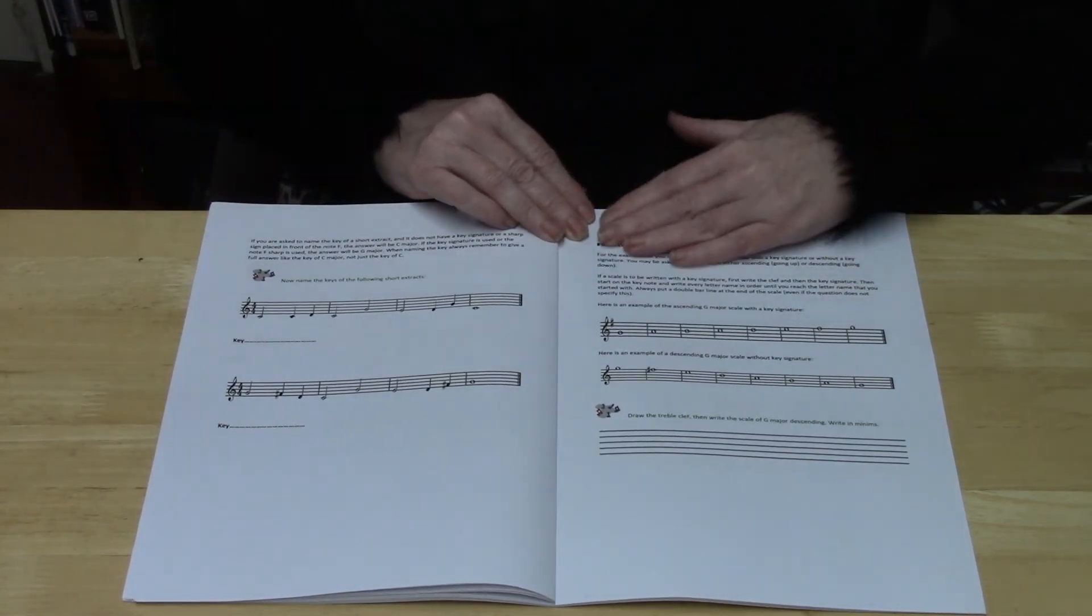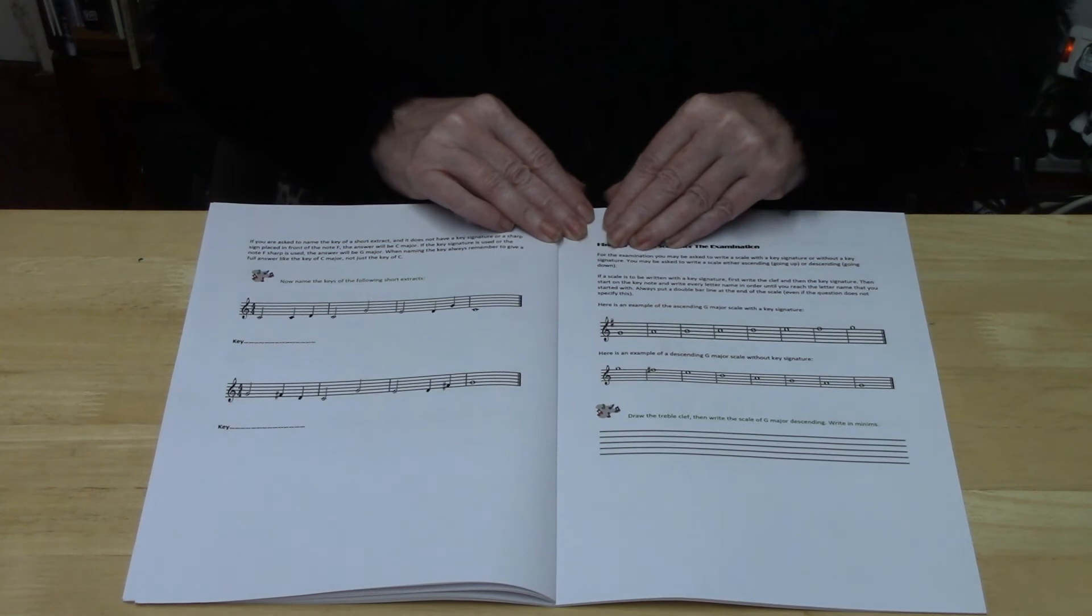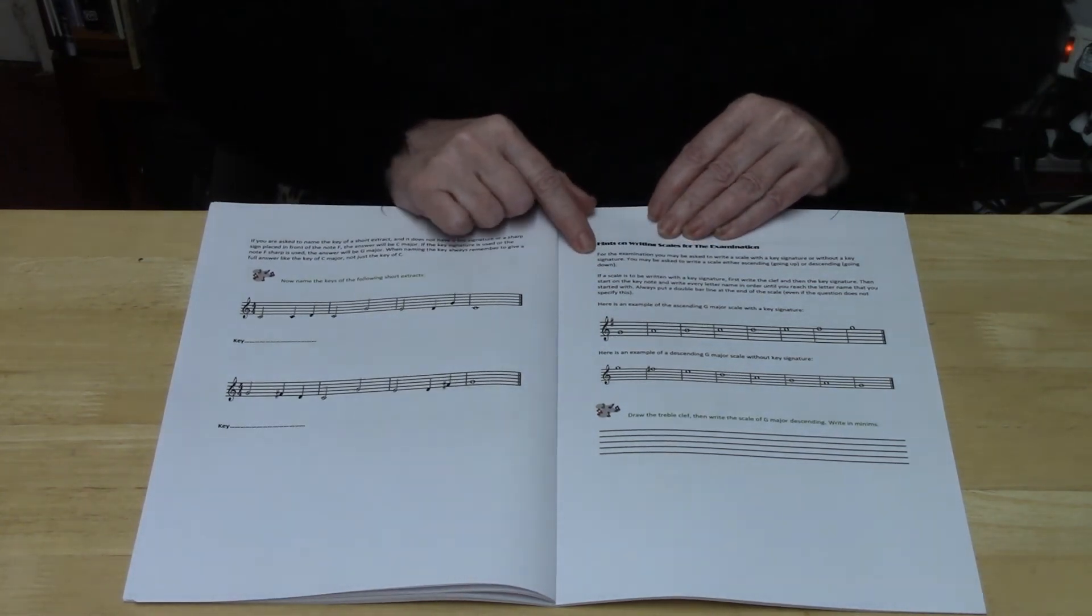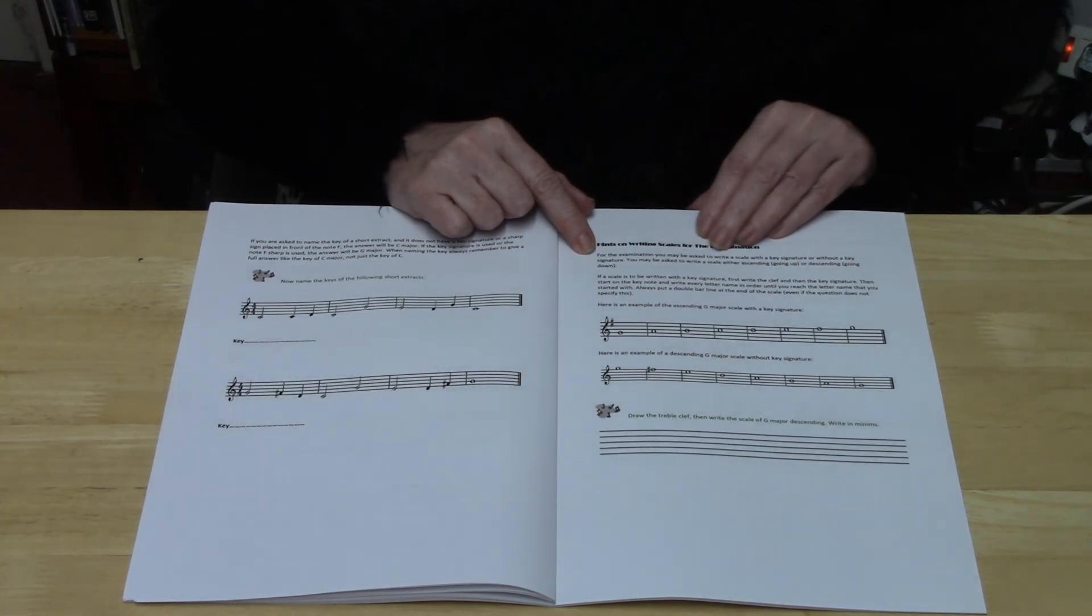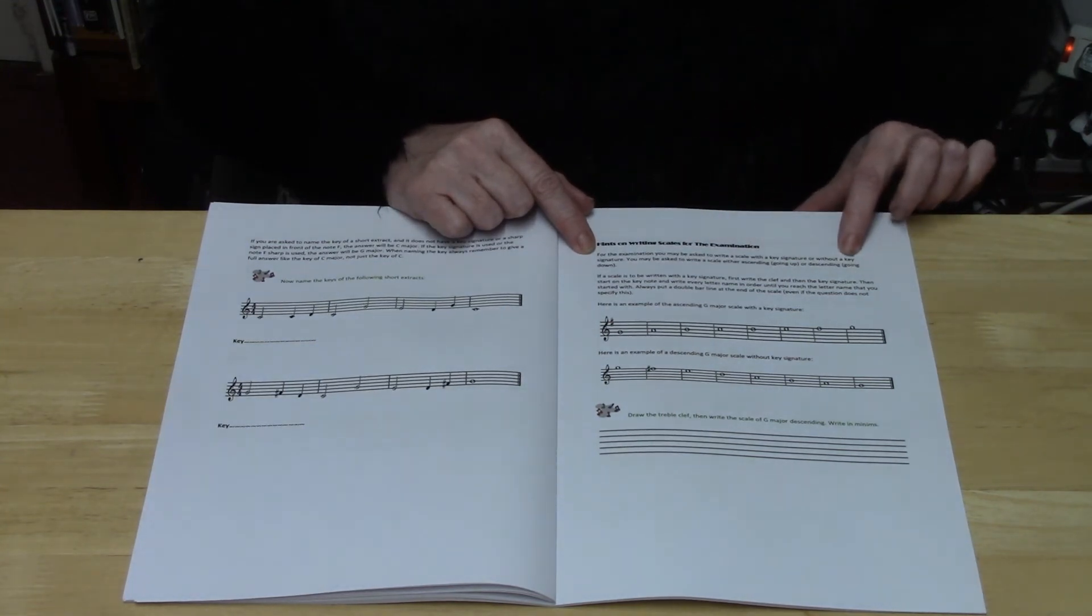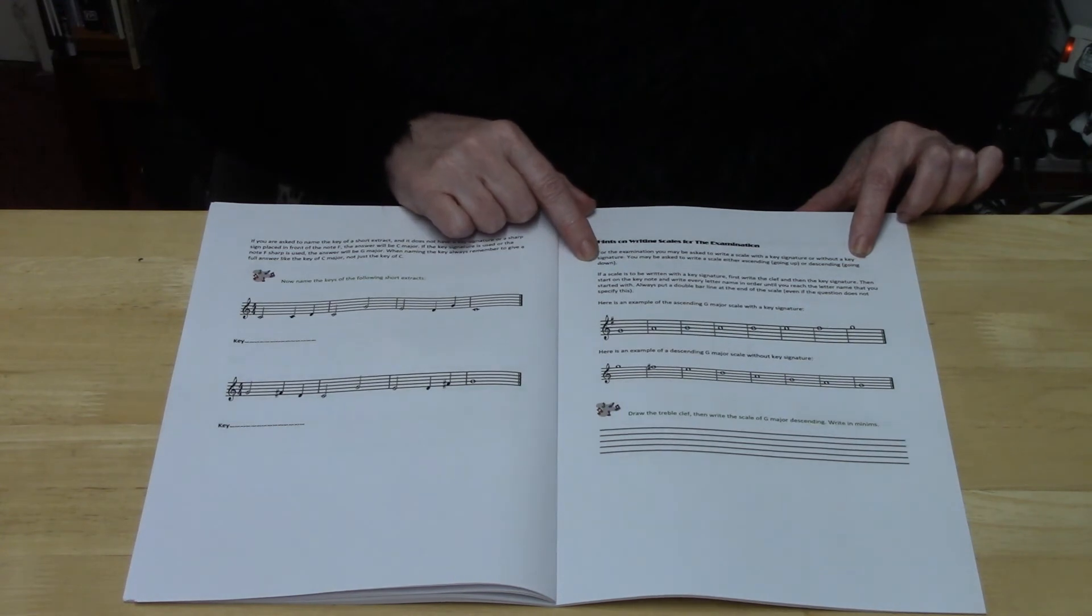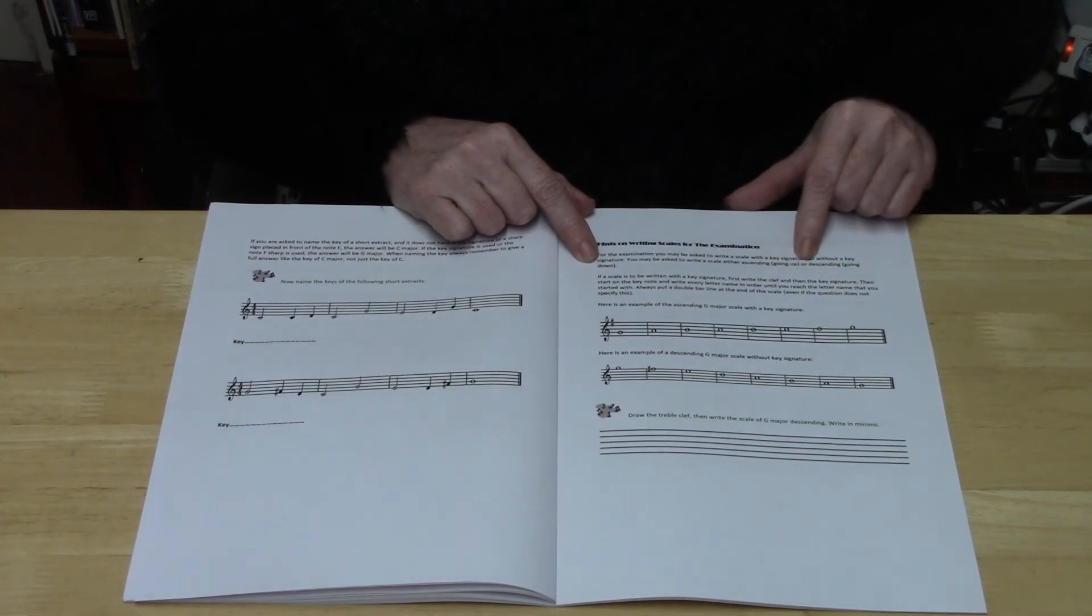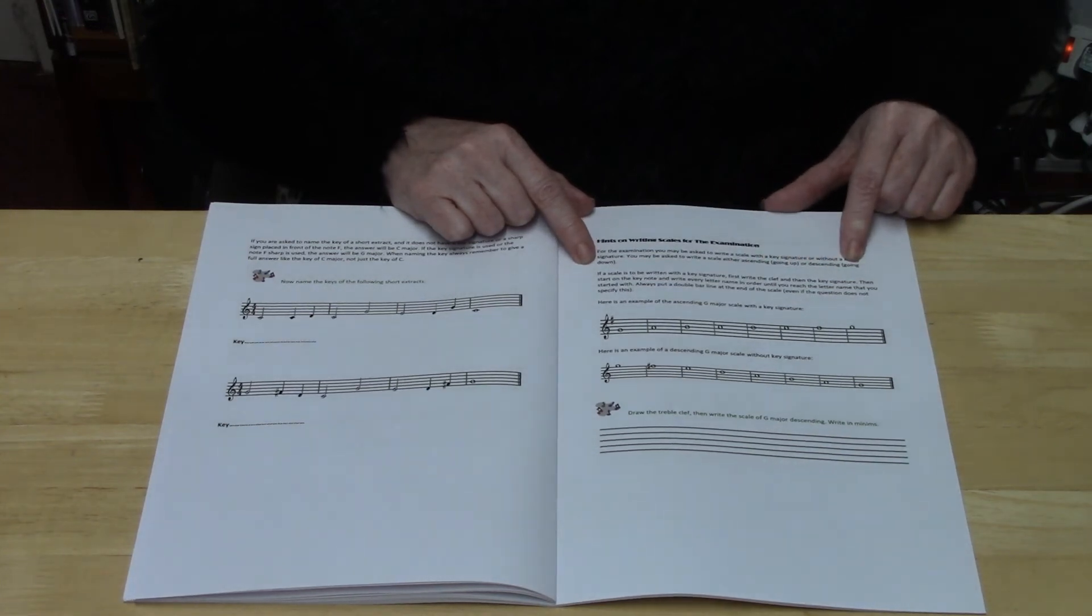So the last section here talks about hints on writing scales for the exam. For the examination you may be asked to write a scale with a key signature or without a key signature. You may be asked to write a scale either ascending, going up, or descending, going down.